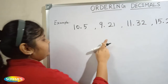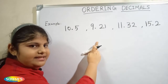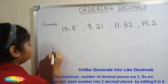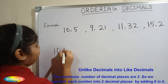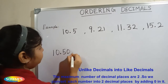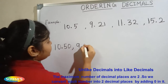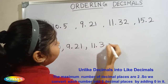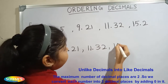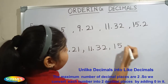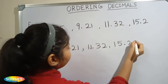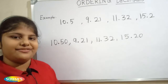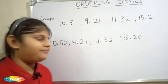The given decimals are unlike decimals, so we have to convert them into like decimals. The like decimals are: 10.50, 9.21, 11.32, and 15.20.